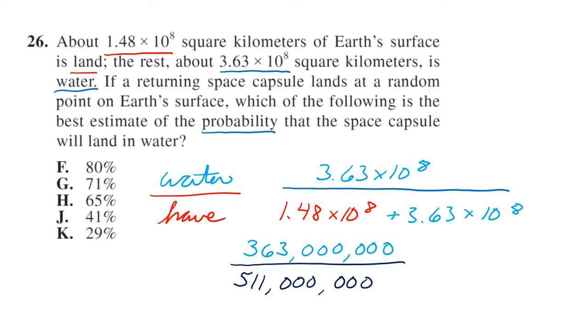I just went ahead and converted them. You divide top number by the bottom number and you get 71 percent. The faster way to do this one: if you know about 70 percent of the Earth's surface is covered in water, you can just get it in G and know that and move on. So this is a question where knowledge of science could actually help you. So G.